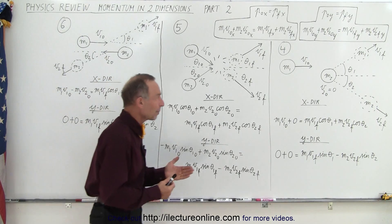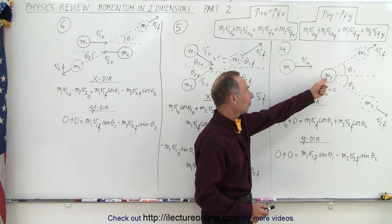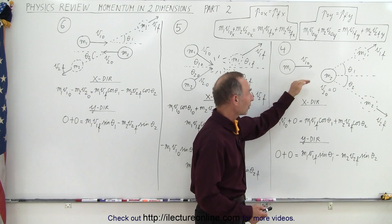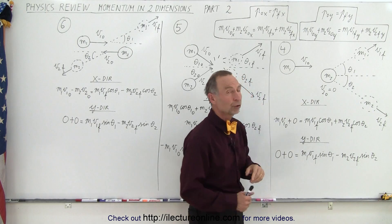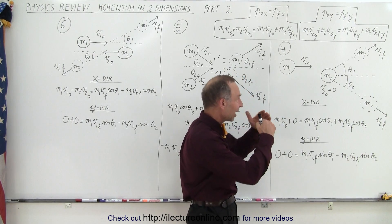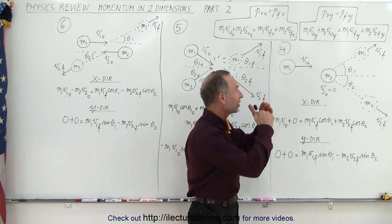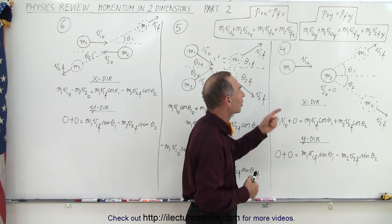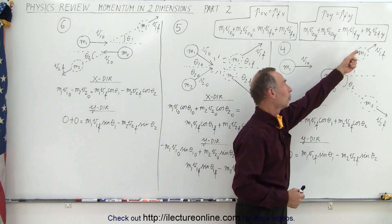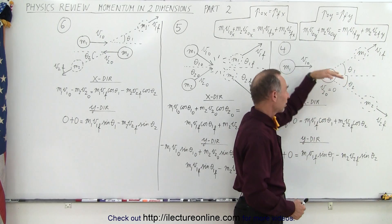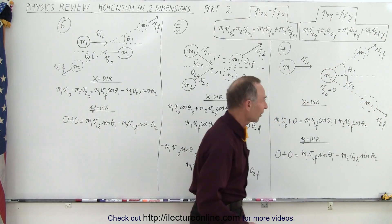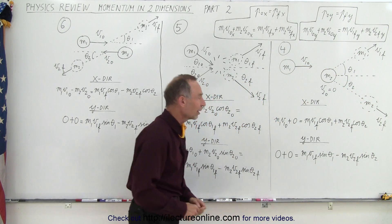The first example: we have an object at rest, M2, and an object moving to the right towards M2. But notice it's not a head-on collision — it's a side or glancing blow collision. And so after the collision, M1 will then ricochet off in that direction, and M2 will then find itself moving in that direction.